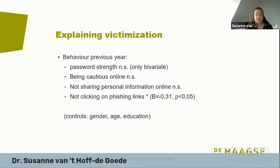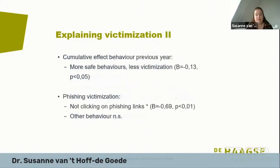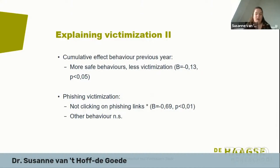This included controls such as gender, age, and education. I also checked for a cumulative effect of being unsafe online — if you use a weak password, are not cautious, and click on links, is that a significant predictor of victimization? Yes. The more unsafe you are, the more victimized you seem to be a year later. However, I think this effect is strongly driven by the effect of not clicking on phishing links, so I need to check whether there is real added value beyond just that predictor. When I changed the dependent variable to specifically phishing victimization, the connection with not clicking on phishing links becomes even larger.